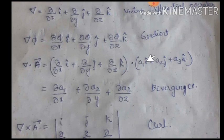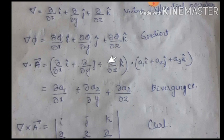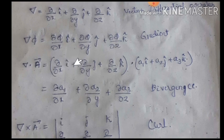When performing the dot product, we use the identities: i dot i = 1, j dot j = 1, k dot k = 1, while i dot j = 0, i dot k = 0, j dot i = 0, j dot k = 0, k dot i = 0, k dot j = 0. A quantity results only from matching vector dot products. Therefore, divergence equals: partial a1 by partial x, plus partial a2 by partial y, plus partial a3 by partial z.